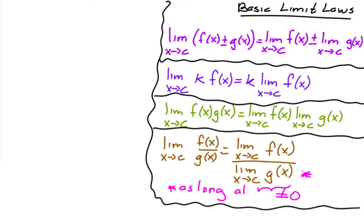And then the limit of a product is the product of the limits. And the limit of a quotient is the quotient of limits as long as the denominator is not equal to zero.